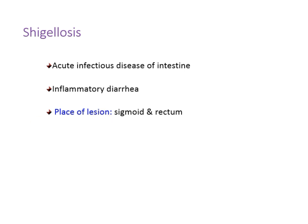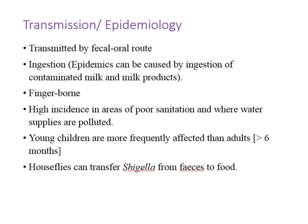The transmission of shigellosis is by the fecal-oral route. The bacteria is shed in the feces of infected individuals. Infection is acquired by ingestion of contaminated food and water. There have been epidemics of shigellosis because of consumption of milk and milk products which were contaminated with Shigella.